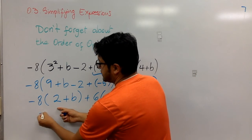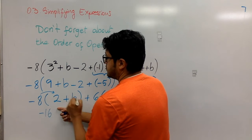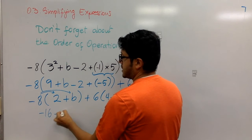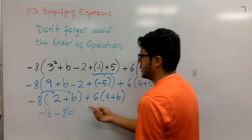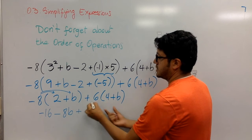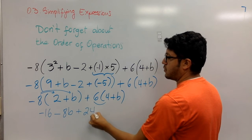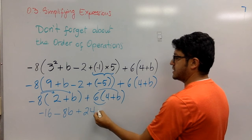This is a negative 16 when I do this multiplication. And then when I do this, this is negative 8b. And now, plus 6 times 4 is 24. And 6 times b is 6b.